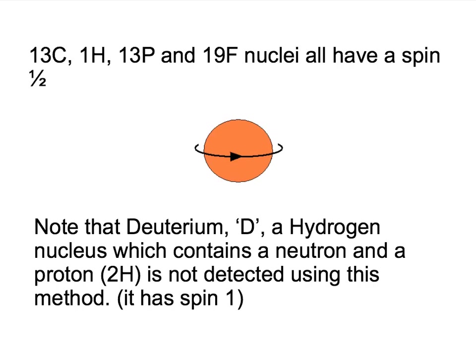Deuterium, or 2 hydrogen, has spin 1, so is not detected using this method. It does not show up on the spectra. This means deuterated solvents can be used in NMR.